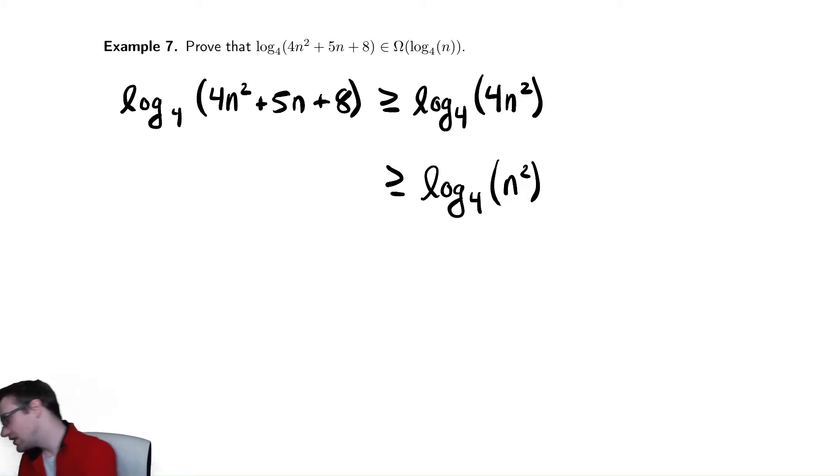We make it smaller and now I can use a nice log rule to pull the 2 out front of the log and have log base 4 of n times 2.